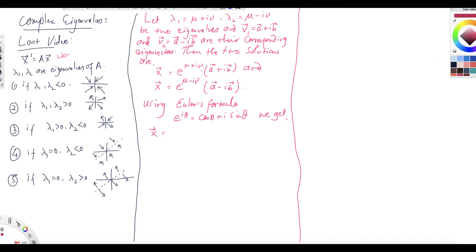If both eigenvalues are negative, the origin is stable — we call it a nodal sink. If both eigenvalues are positive, then the origin is unstable — called a nodal source. If one is positive and the other is negative, it is still unstable; we call it a saddle.